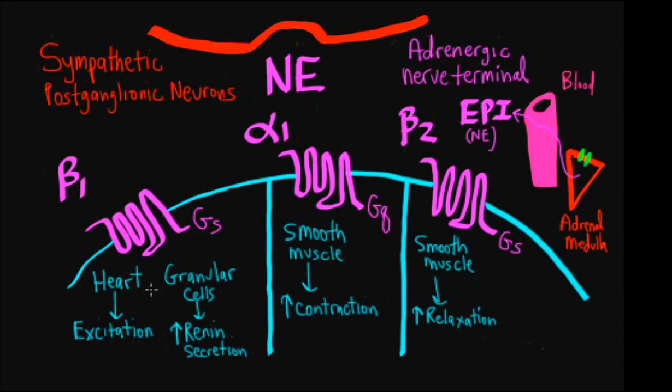There are also beta-1 receptors on granular cells that are found in the afferent arterial going to the kidneys. They secrete this enzyme renin, which regulates the renin-angiotensin-aldosterone system, regulates blood pressure. And the beta-1 receptors mainly are found in these two locations that have very important implications for the cardiovascular system.